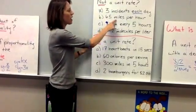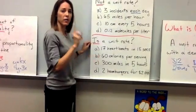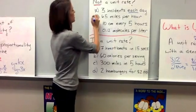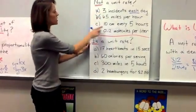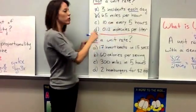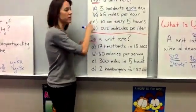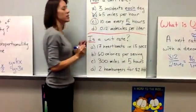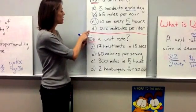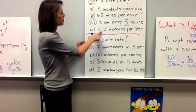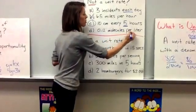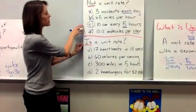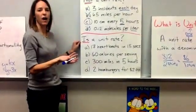B says 65 miles per hour. If you're talking about per hour, that's one hour. So this one is a unit rate. C says 10 centimeters every five hours. So this is a rate, not a unit rate. This right here would have to be for one hour in order to be a unit rate. So this one is not a unit rate. And this one says D, 0.12 molecules per liter. So this per liter means one liter, so this one is a unit rate also. So the only one here that is not a unit rate is 10 centimeters every five hours.